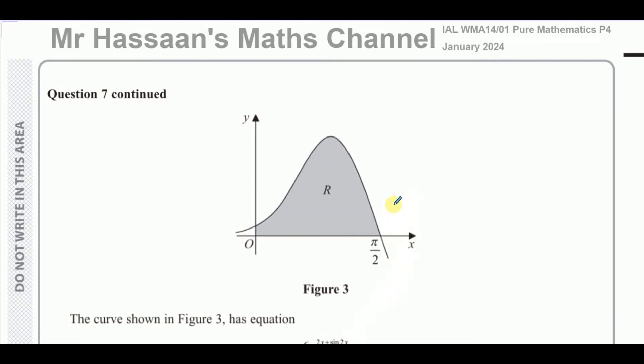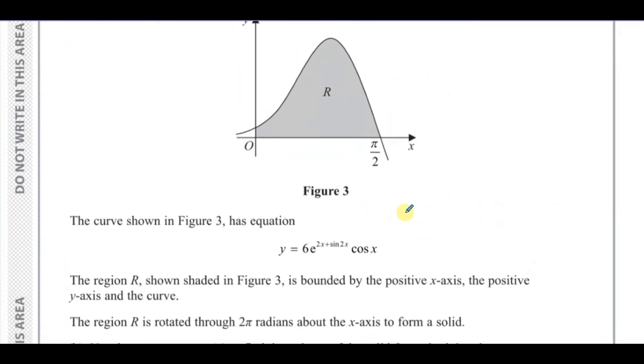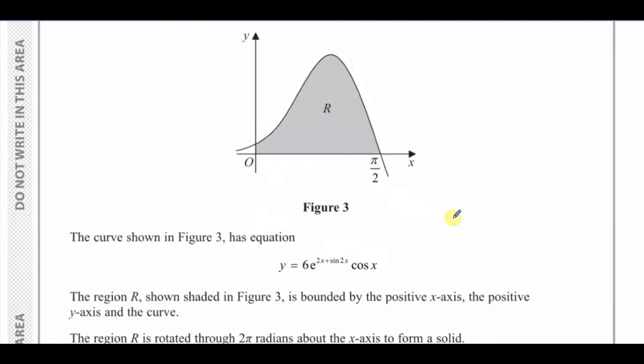Now for question 7 part B, it's about volumes of revolution. We're given a curve with equation y equals 6e to the power of 2x plus sine 2x times cosine x. The region R is rotated, is shaded in Figure 3, and is bounded by the positive x-axis, the positive y-axis, and the curve.